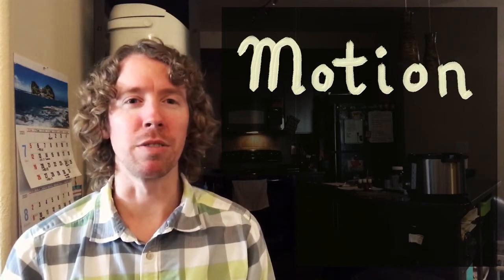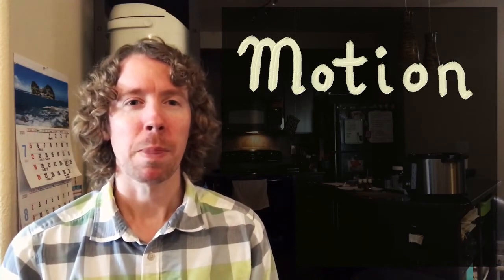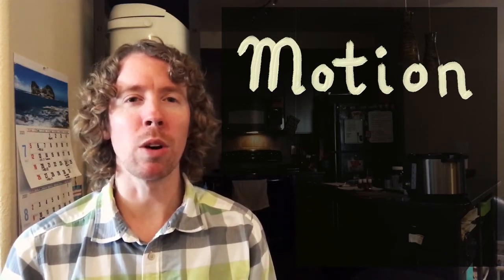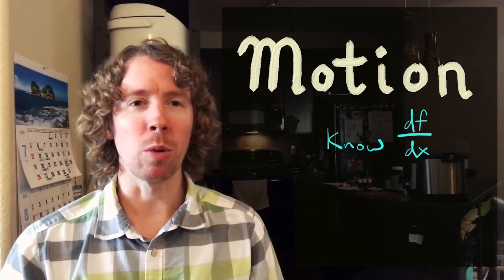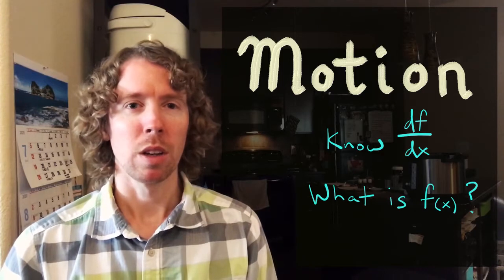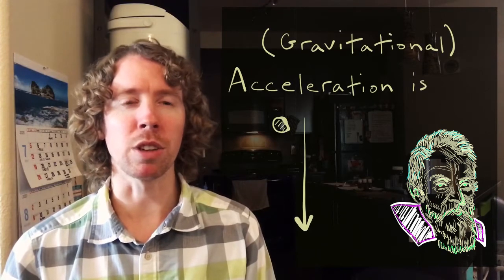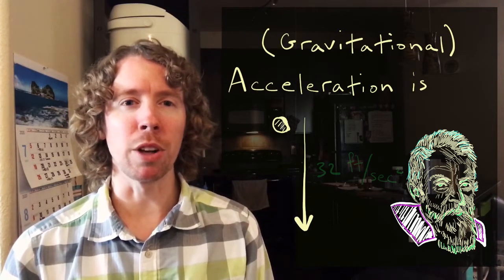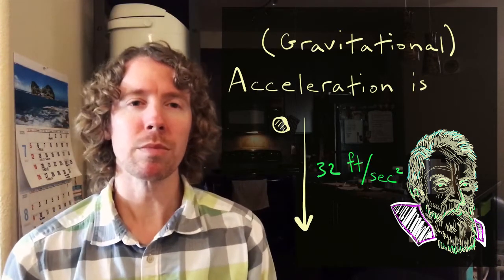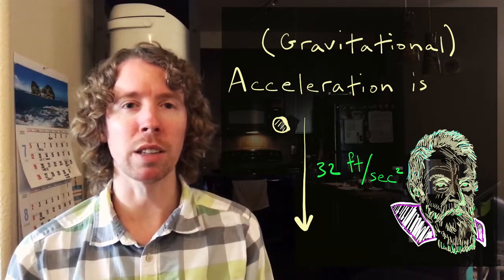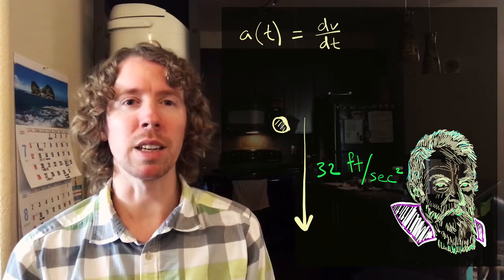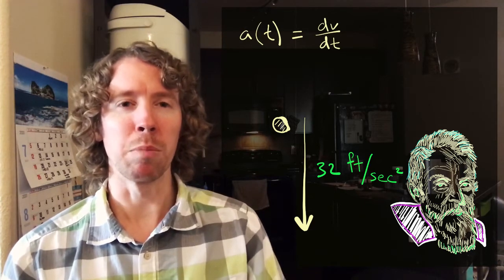In applications of calculus to physics, it's often the case that we know rates of change and we want to know what the original functions were. For example, Galileo figured out that the acceleration of objects near the surface of the earth is about 32 feet per second squared. We know that the acceleration is the instantaneous rate of change of velocity, and velocity is the instantaneous rate of change of position.